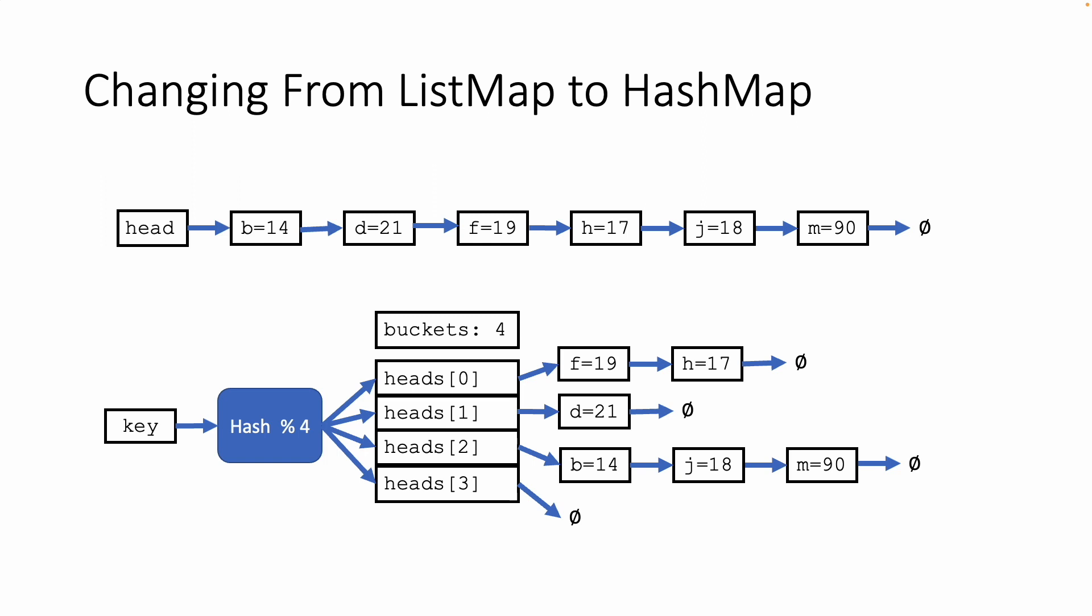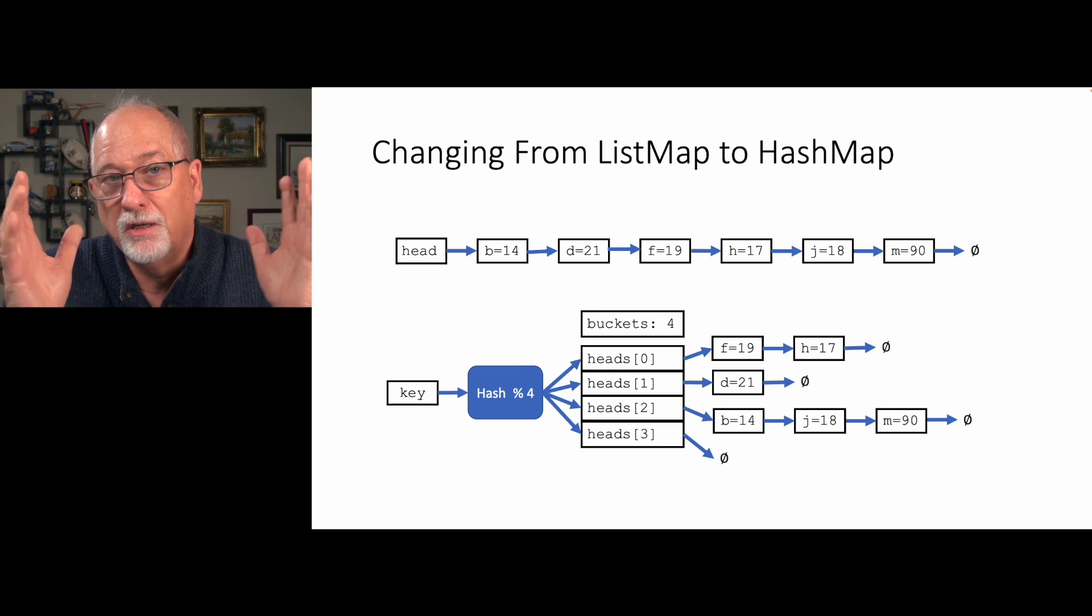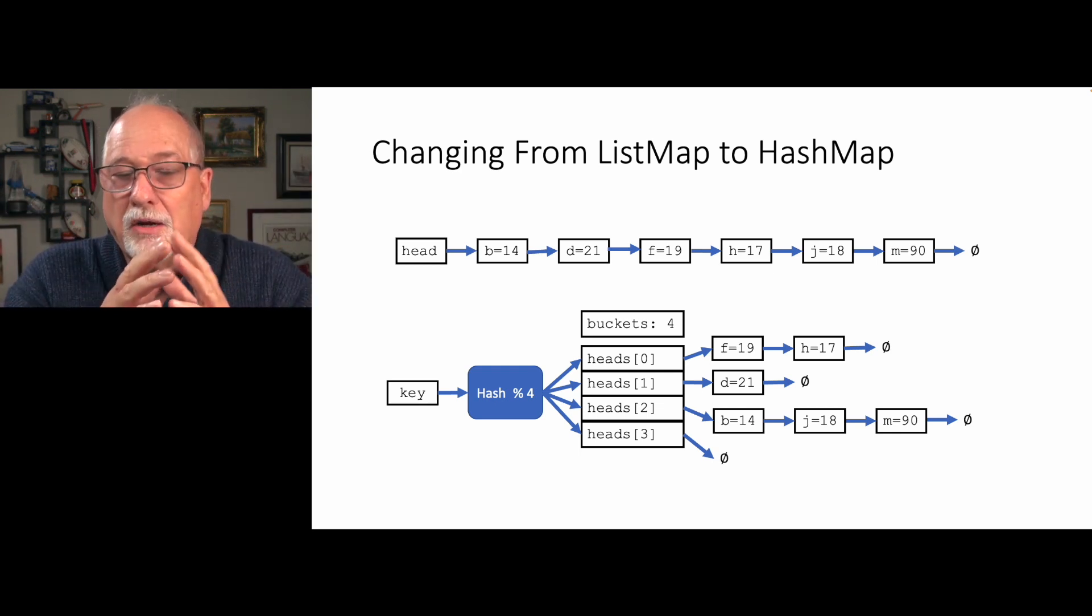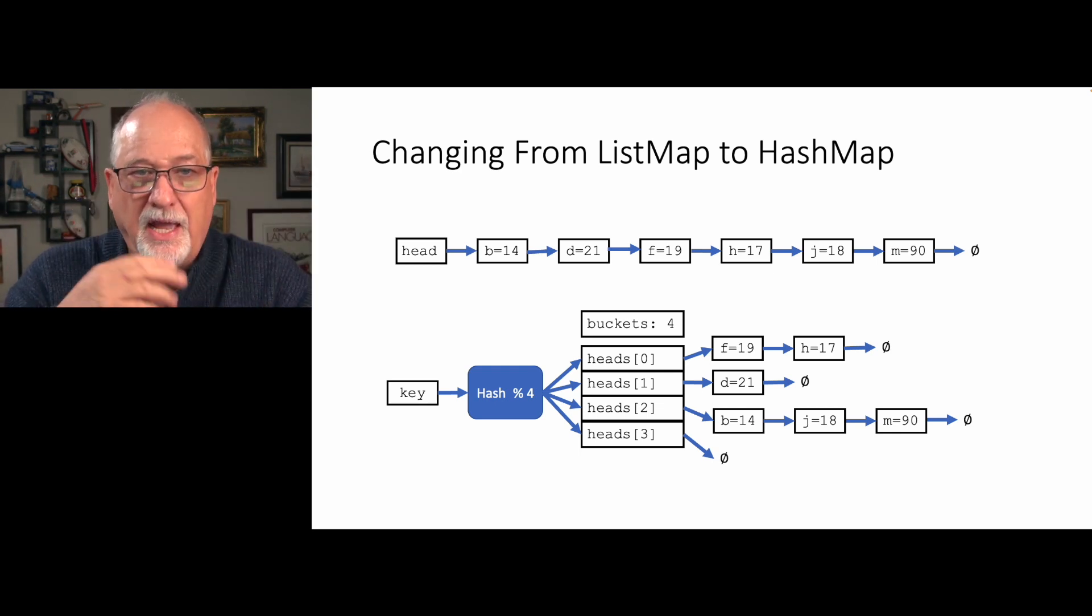But if you look at the hash map, you take the actual key, you run it through a hash function which creates some big number. It is just a number no matter how long the key is—it can be one character or two thousand characters. Eventually the hash runs a calculation that gives us back a number.